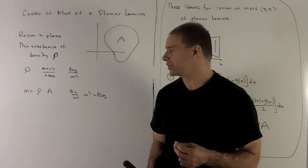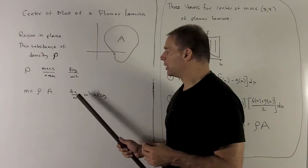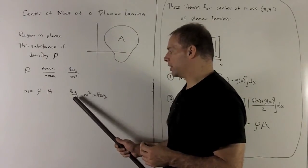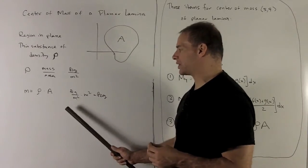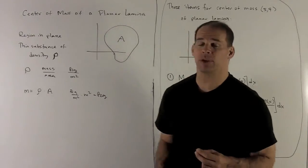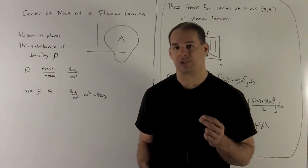That produces my mass. If we check the units, density is kilograms per meter squared. Area is going to be meter squared. We multiply through. The meter squareds cancel out, leaving me kilograms, which is definitely units in terms of mass.